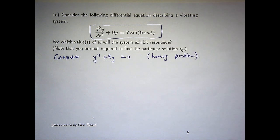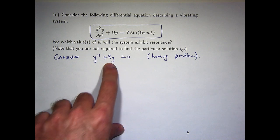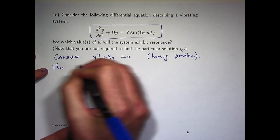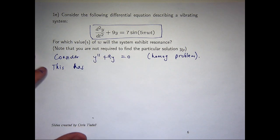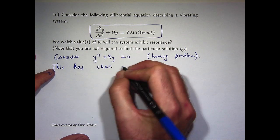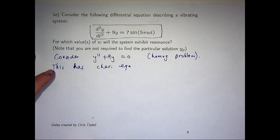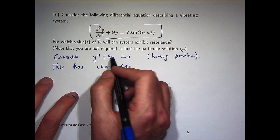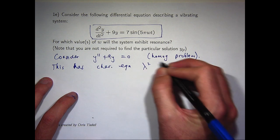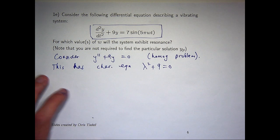Now, the solution to the homogenous problem really guides us in what form of particular solution y sub p to construct. They tell us that we're not required to find the particular solution but we'd still like to know its form. So with this particular homogenous problem, the easiest way is just to write down the characteristic equation, which is a quadratic equation formed from the coefficients of this problem.